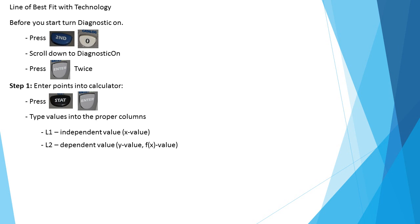Then you enter the points into the calculator - press stat and enter. Type the values into the proper columns. L1 is your independent value column or your x value. L2 column is your dependent variable - your y value or f(x) value. Then use the calculator to find the equation - press stat, right arrow, 5, and enter.